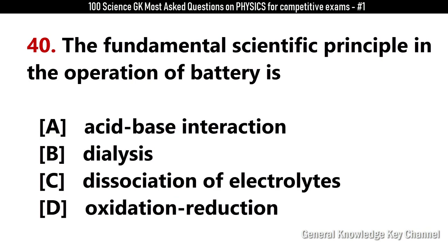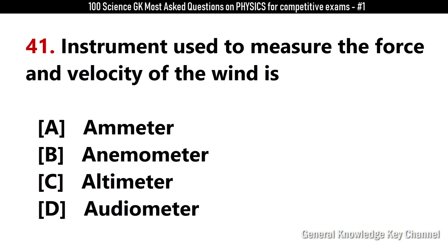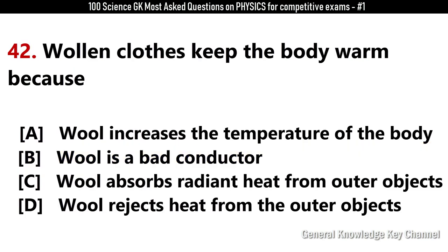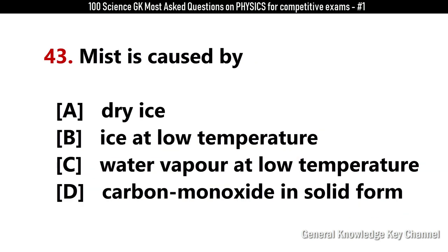The fundamental scientific principle in the operation of a battery is? Answer C: Dissociation of electrolytes. The instruments used to measure the force and velocity of the wind is? Answer B: Anemometer. Woolen clothes keep the body warm because? Answer B: Wool is a bad conductor. The mist is caused by? Answer C: Water vapour at low temperature.